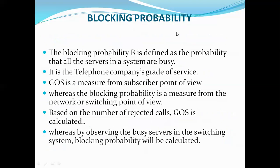Blocking probability is a property of the exchange. It is defined as the probability that all servers are busy — it is the telephone company's measure. Grade of service is measured from the subscriber's point of view, whereas blocking probability is the measure from the network or switching point of view. The number of rejected calls quantifies grade of service, while blocking probability quantifies the probability that the switching system or server is busy.